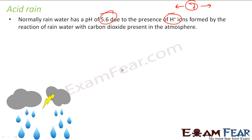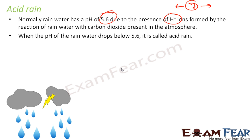So if the pH of rain is less than 5.6, then it is acidic. When the pH of rainwater is less than 5.6, we call it acidic rain — we call it acid rain.